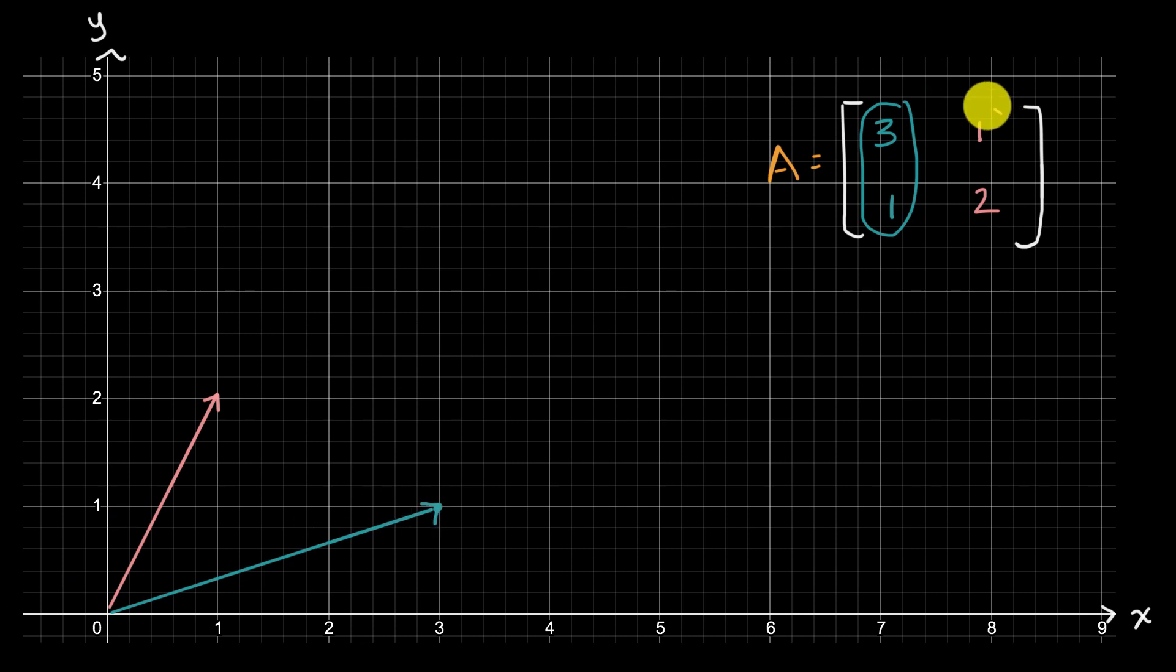And then that second column, you can view it as telling us that we have another vector one, two, which I have depicted in this pink color.